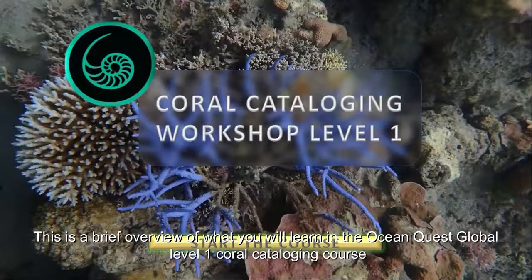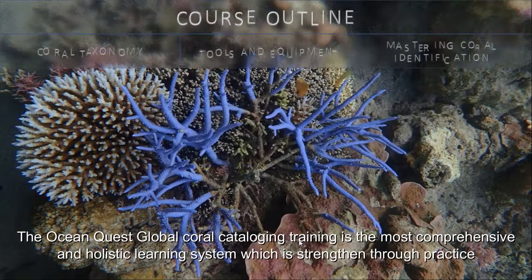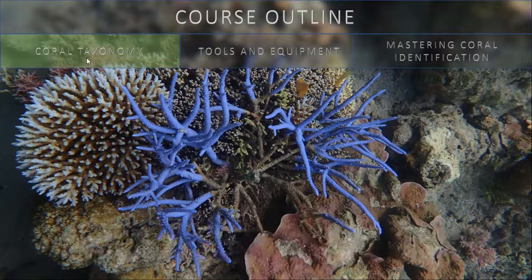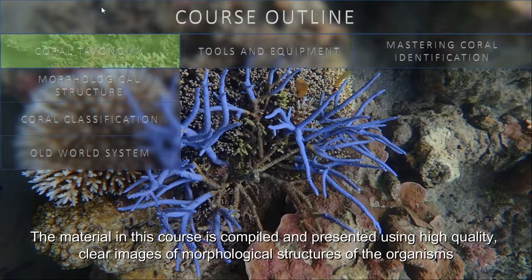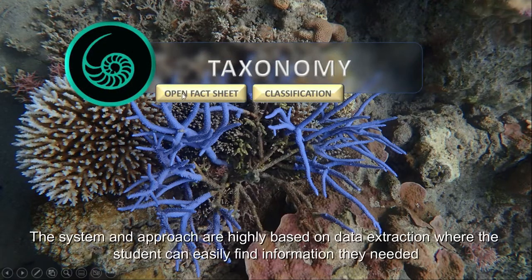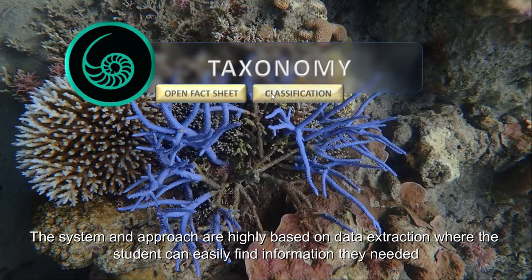This is a brief overview of what you will learn in the OceanQuest Global Level 1 Coral Cataloging course. The OceanQuest Global Coral Cataloging training is the most comprehensive and holistic learning system, which is strengthened through practice. The material in this course is compiled and presented using high quality, clear images of morphological structures of the organisms. The system and approach are highly based on data extraction, where the student can easily find information they need.